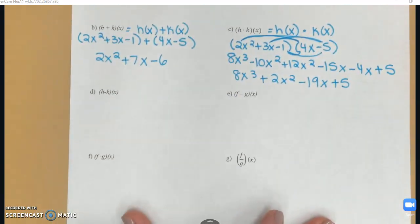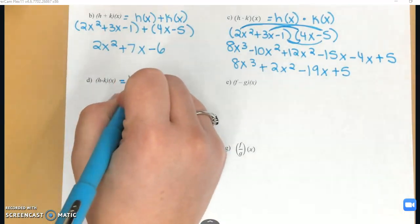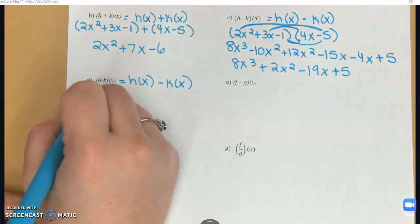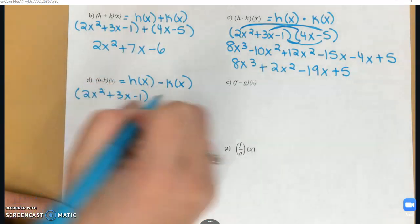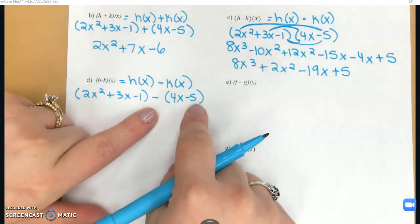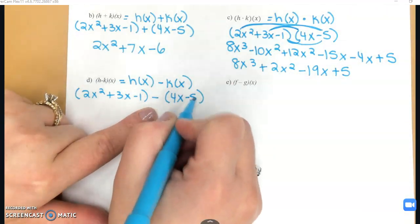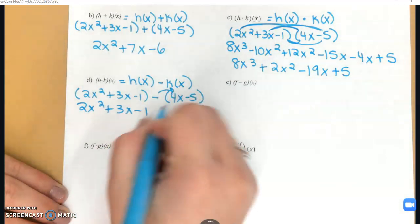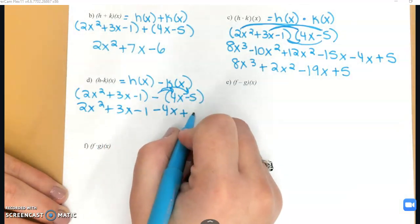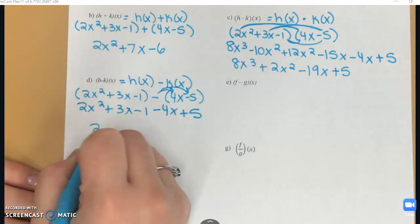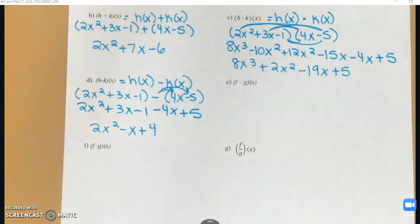Part D is h minus k of x, so I take h of x and subtract k of x: 2x squared plus 3x minus 1, minus open parenthesis 4x minus 5 close parenthesis. The parentheses are very important because this minus sign in the middle has to be distributed to the second function, giving me negative 4x plus 5. You have to distribute the negative, and putting those parentheses there increases your chances of remembering to do that. Now I can combine like terms to get my final answer.